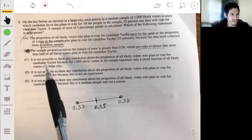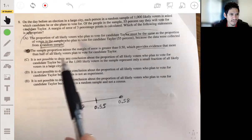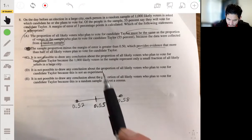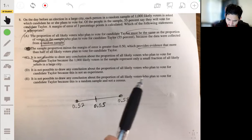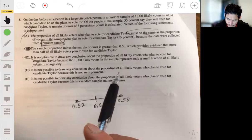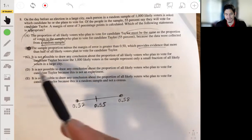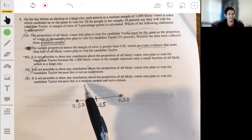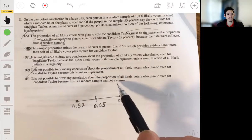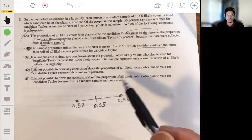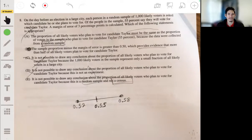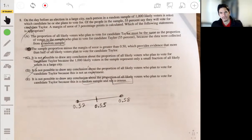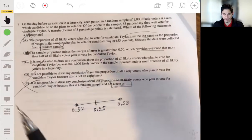Let me just briefly go over the rest to see if I can catch what they're trying to get you with. It is not possible to draw any conclusion about the proportion of all likely voters who plan to vote for candidate Taylor because only 1,000 likely voters? No, no, this is wrong. 1,000 is enough. It is not possible to draw any conclusion about the proportion of all likely voters who plan to vote for candidate Taylor because this is a random sample and not a census? No. A census is what we dream of always—it's supposed to have data of everybody in the population. It's something that's usually filled out by households every 10 years. But anyways, it's not going to be. For sure, the answer is B.